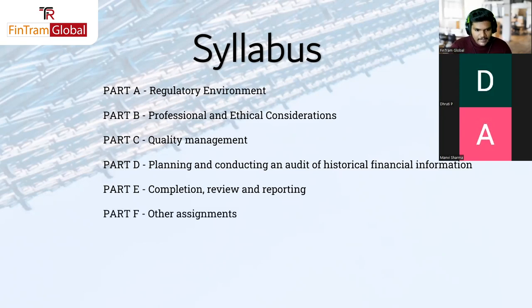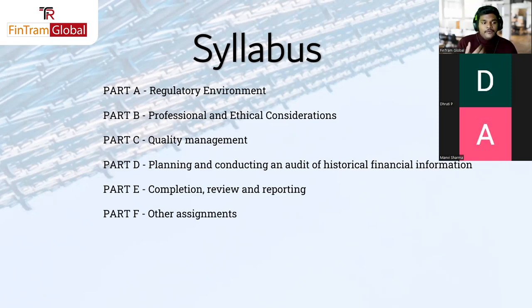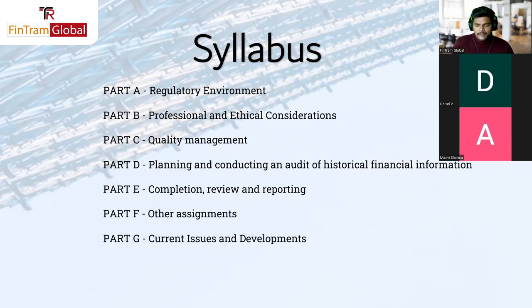Part F is Other Assignments — additional services that audit firms provide beyond the financial audit itself, including things like conducting due diligence reviews, reviewing prospective financial information, forensic audit, and so on. Part G is Current Issues and Development — hot topics in the industry right now. There would be some current issue questions worth around six to eight marks which can come up within the Triple A paper.